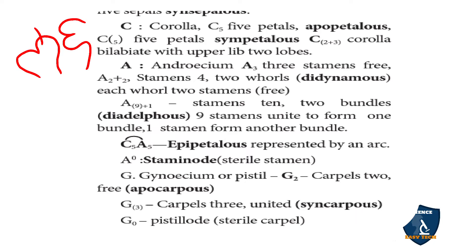Androecium is represented by A. A3 means three free stamens. A2+2 means four stamens arranged in two whorls — didynamous. A(9)+1 means ten stamens — diadelphous — nine stamens united in one bundle and one stamen free. C5A5 with an arc connecting C and A represents the epipetalous condition. A0 represents staminode — sterile stamen or absence of stamens.